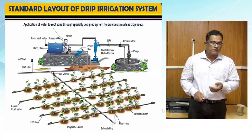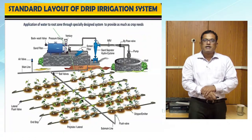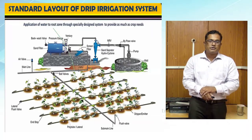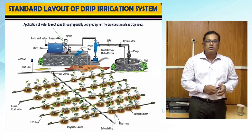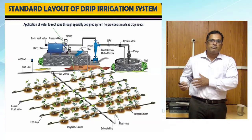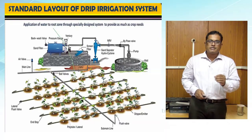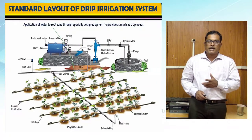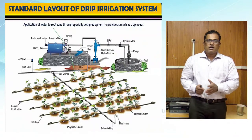After passing through the screen filter, clean water goes into the system, which consists of different sizes of PVC and LLDPE pipes. PVC pipe is used for the main and sub-main lines, while the lateral pipe — smallest in diameter, running 25 to 35 meters along the bed — is made of LLDPE. Under it is the emitting device, called a dripper or emitter, which comes in two kinds: inline and online.